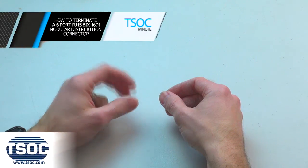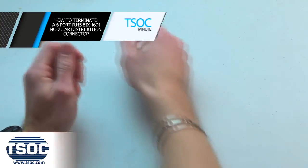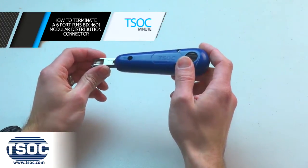How to terminate a 6-port RJ45 Bix 46DI Modular Distribution Connector.